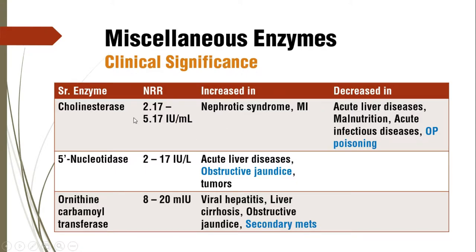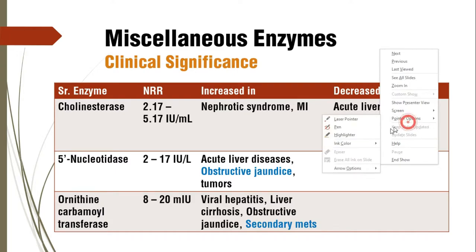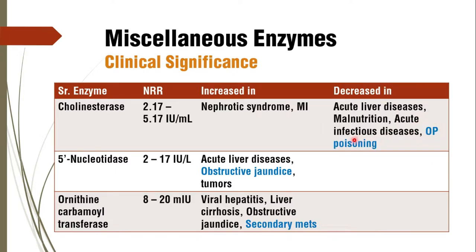Coming to the first enzyme, that is cholinesterase. Though it is increased in nephrotic syndrome and myocardial infarction, it is found to be decreased in acute liver diseases, malnutrition, and acute infectious diseases. But most importantly, it is decreased in OP poisoning — the fact that in organophosphorous poisoning the cholinesterase activity is decreased has the main clinical application.